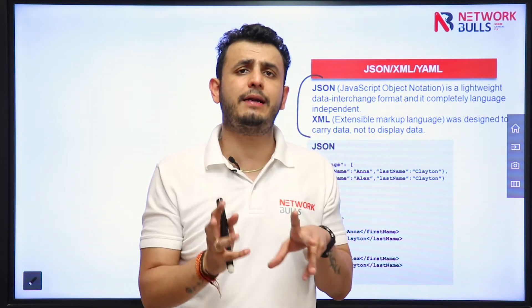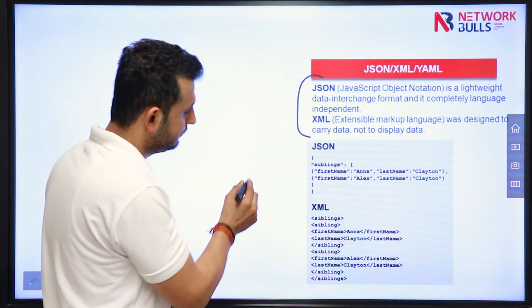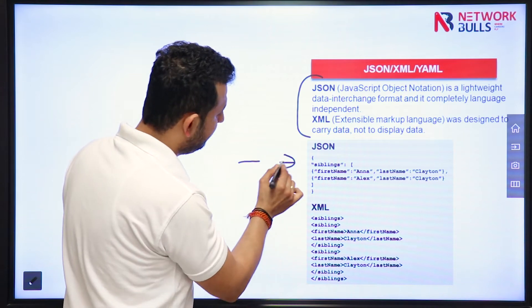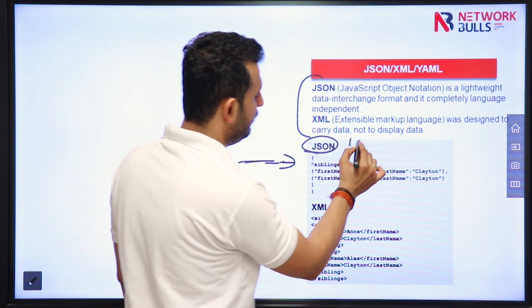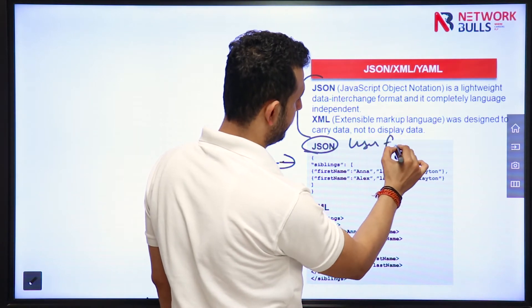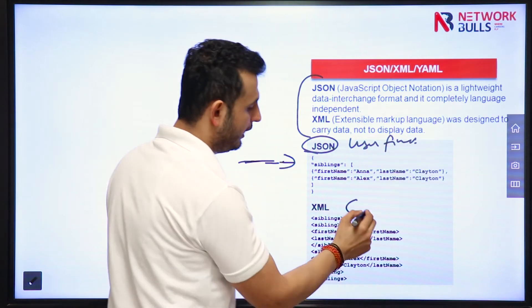So let me give you an example to make you understand. For example, this is the format used by JSON. JSON is basically user-friendly as compared to XML.